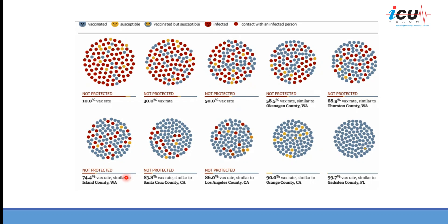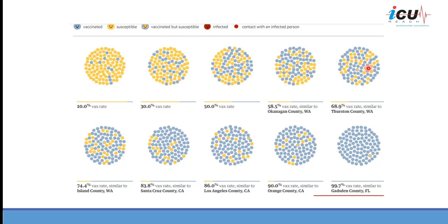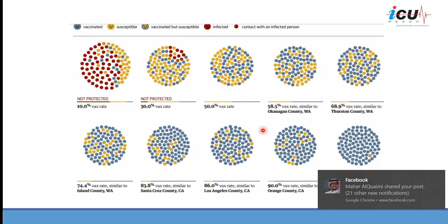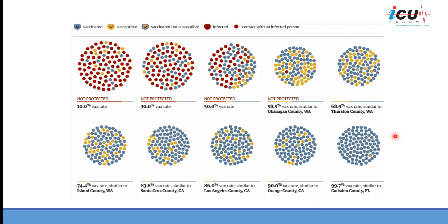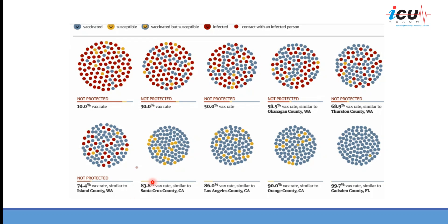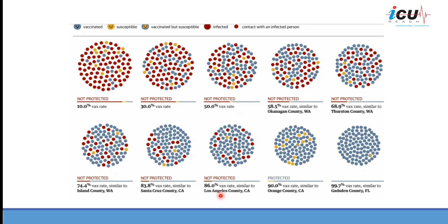Running the same simulation again with the same virus and R0, communities with lower vaccination rates remain unprotected. This time we can see that the 83.8% community got infected, and even the 86% community was affected, but at 90% the community is protected. This example is actually for measles, and it illustrates how communities are affected by an infectious case based on different vaccination rates.